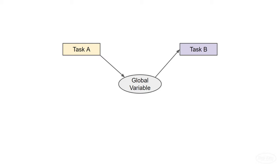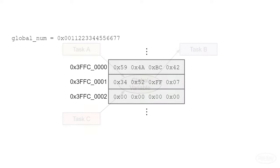However, what happens if another thread also wants to send the same kind of information to thread B? In this scenario, it's possible that task A changes the global variable, then task C changes it again before task B gets a chance to read it. It can get even more sinister than that.